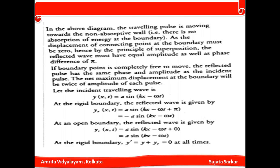If the traveling wave is given by y(x, t) = A sin(kx − ωt), then at the rigid boundary the reflected wave is given by y(x, t) = A sin(kx − ωt + π). Since sin(π) = −1, we can write this as −A sin(kx − ωt).